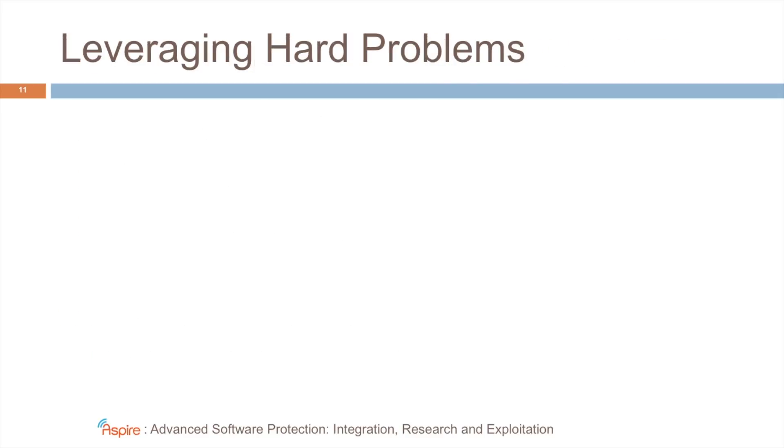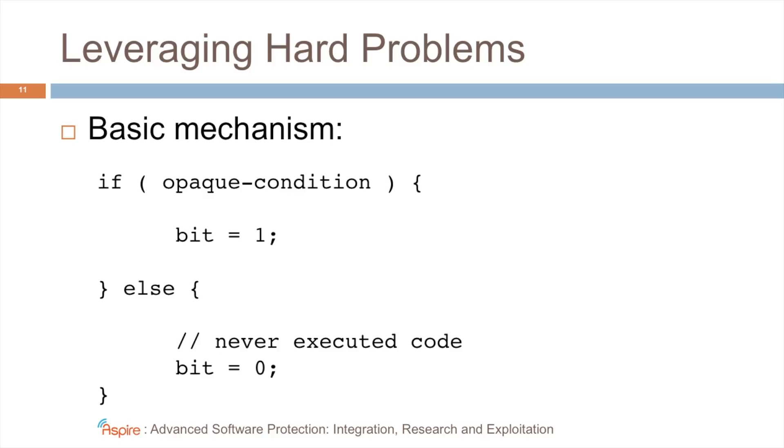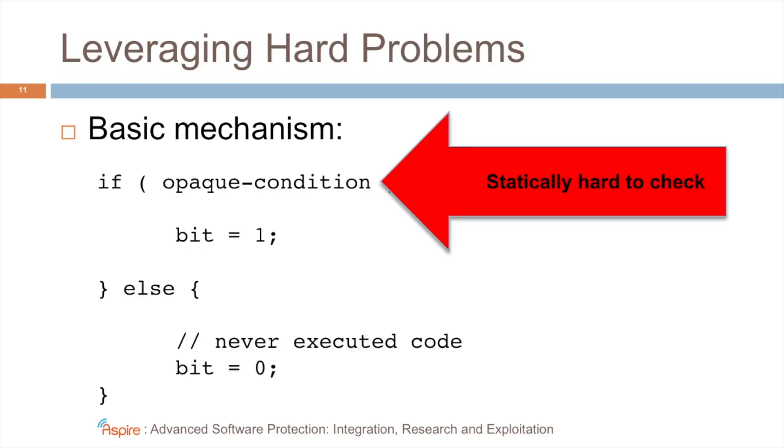So how do we leverage that hard problem? Here you see the generic code structure. We have an opaque condition that will be very hard to analyze. Definitely statically it should be undoable, or at least in polynomial time it should be undoable. And then based on this condition, a bit will be set to 0 or 1. And so we can set bits of a constant based on a very hard-to-analyze condition.